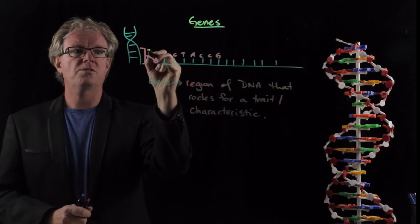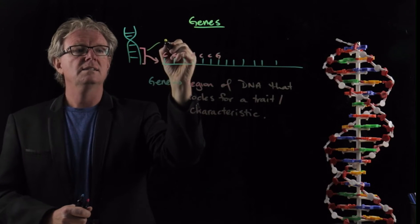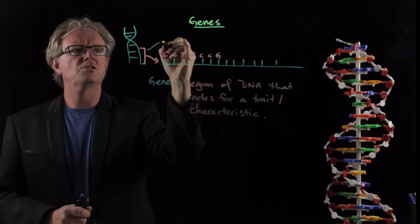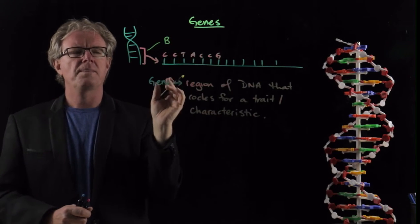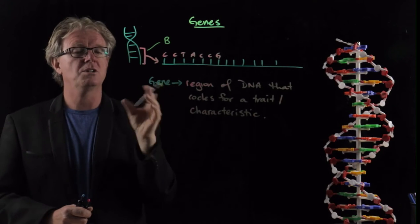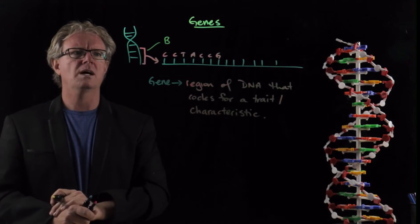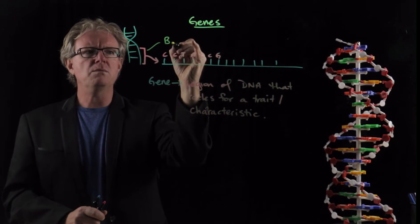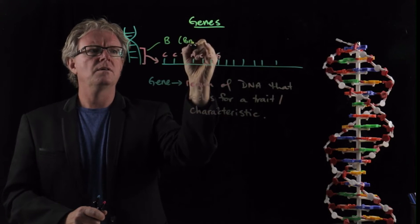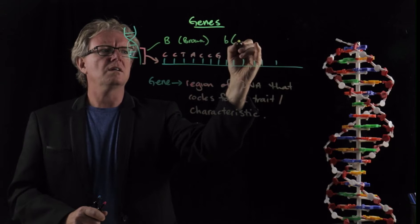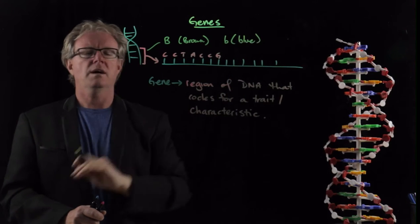And this gene here might code for, let's say, eye color. In particular, eye color is determined by, at the basic level, two genes. We know that's not really true when we learn more biology, but we say B representing brown, and then we can say b representing blue.